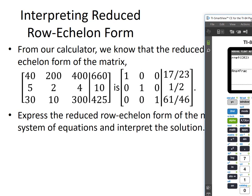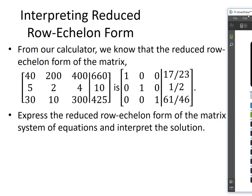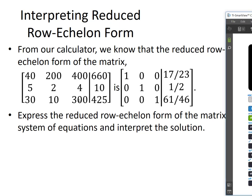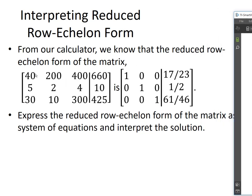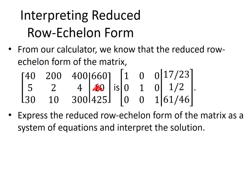From our calculator, we know that the reduced row echelon form — we'll use this as an example, this is slightly different than the one we started with — that this matrix beginning of 40, 200, 400, 660, second row 5, 2, 4, 10, and final row 30, 10, 300, 25 — actually, let me back up. I'm going to change the second row value to 5, 2, 4, and make that 25 to match the example we've been doing.